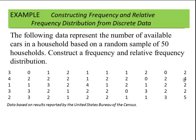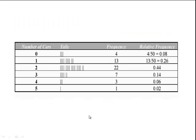Let's look at an example. The following data represents the number of available cars in the household based upon a random sample of 50 households. We're going to summarize this data using a table, actually two tables: a frequency and a relative frequency.